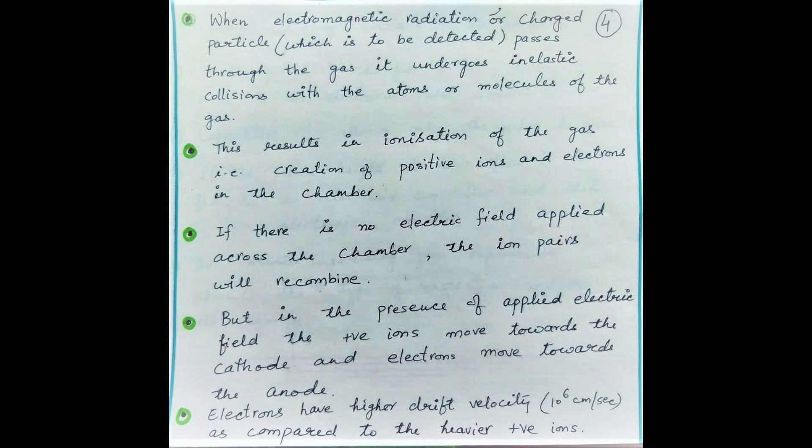When any incident charged particle or radiation passes through the gas filled in the chamber, it collides inelastically with the atoms or molecules of the gas. In these collisions, the incident particle or radiation will lose its energy, and this loss of energy may cause excitations or ionization in the gas, resulting in the creation of ion pairs — positive ions and electrons. If there is no electric field set up across the chamber, the created ion pairs will readily recombine and there will be no pulse. But in the presence of some external voltage applied across the electrodes, the created ion pairs will move towards their respective electrodes — the heavy positive ions move towards the outer walls acting as cathode, and the electrons move towards the central wire at high positive potential.